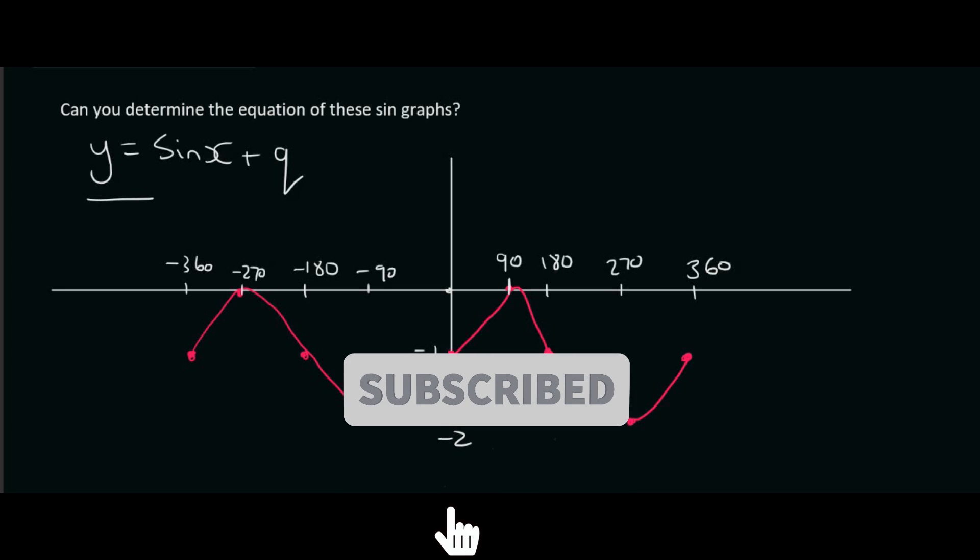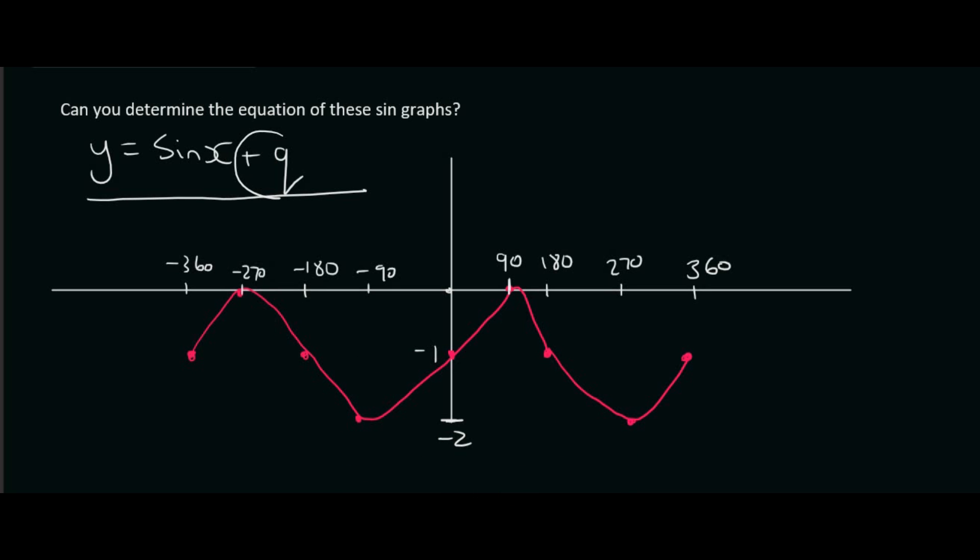So they tell us that this is a sin graph, but there's some letter. This graph has either been moved upwards or it has been moved downwards. What I like to do is the following. I know that a normal sin graph goes like this. So it goes up to 1 and it goes down to minus 1.